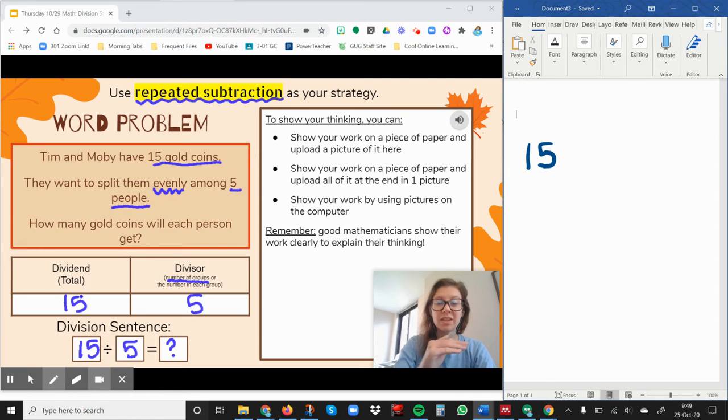So we would be giving one to five people at a time. So we would be taking five away from our total at once. So we're going to do 15 minus 5 equals 10.